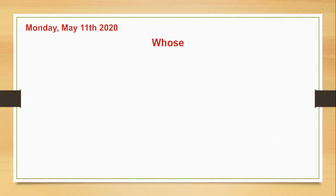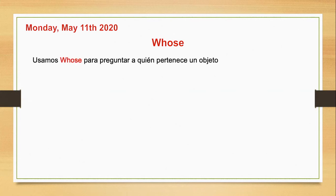Today we are going to talk about 'whose'. This is an adjective interrogative and we use it to ask someone — to ask to whom something belongs. 'Whose' es un adjetivo interrogativo, una palabra que me va a ayudar a preguntar a quién le pertenece algo. Por ejemplo: ¿de quién es este borrador? ¿de quién es este lápiz? ¿de quién es esta pintura? ¿de quién son estos colores?